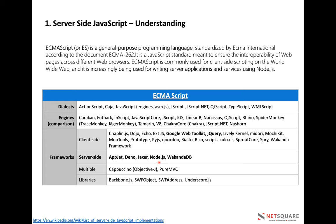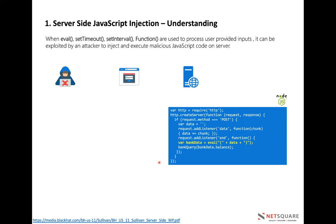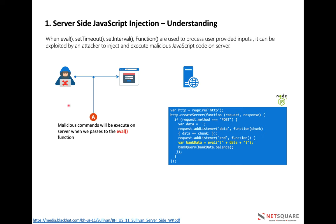Let's start with a Node.js example of how to find server-side JavaScript injection. When the server involves your input directly in an eval function, setTimeout function, setInterval, or a Function constructor used to process untrusted input, it can be exploited by an attacker to inject and execute malicious code. For example, here is a small code snippet that accepts POST method data, stores it in a variable, and passes it into the eval function.